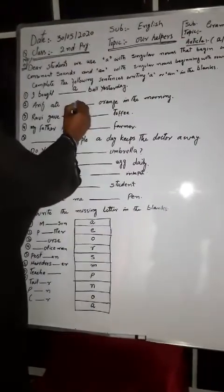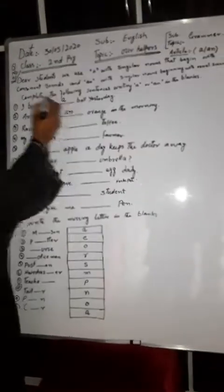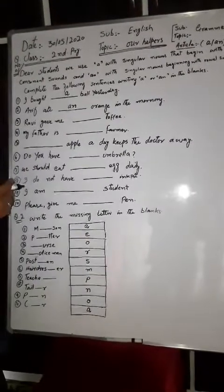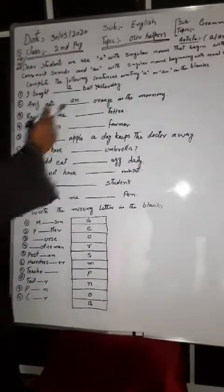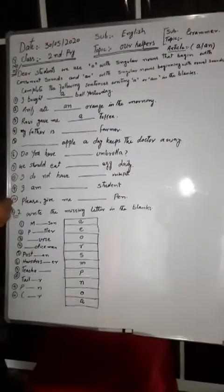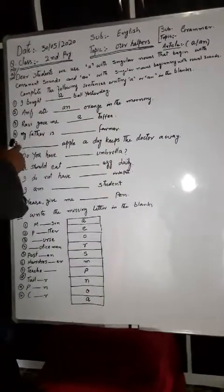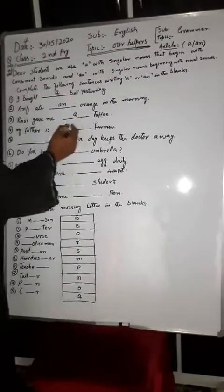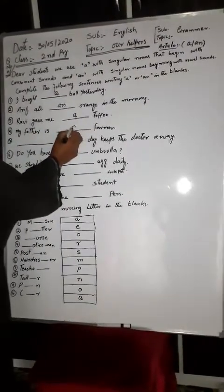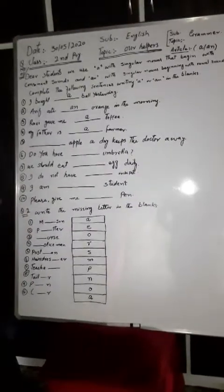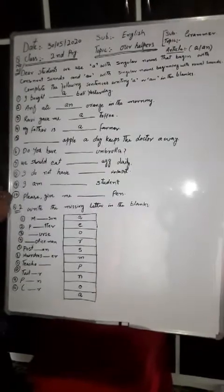My father is a farmer. 'F' consonant, so we use 'a'. It is correct. An apple a day keeps the doctor away.